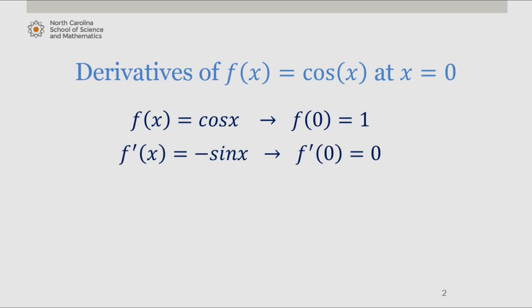First derivative is negative sine of x. Evaluated at 0 is 0. Second derivative is negative cosine of x. Evaluated at 0 is negative 1.